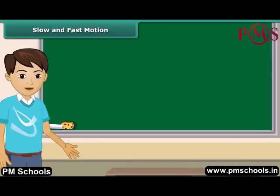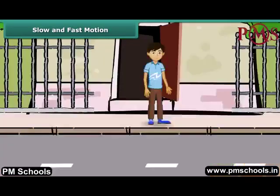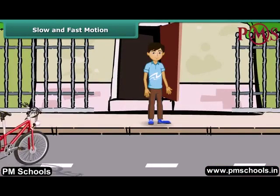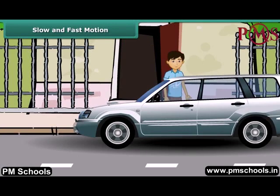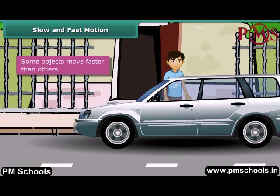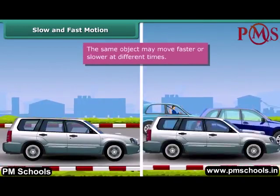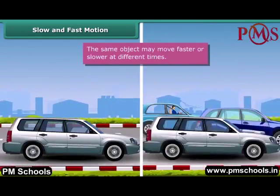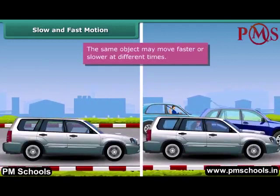Suppose you have an appointment with your doctor at 5 in the evening. It is already 4:30 pm and the doctor's clinic is 5 km away from your house. You have the choice of either cycling down or taking a taxi to the clinic. You will take a taxi because a taxi is faster than a cycle. So we can say that some objects move faster than others. Now the same taxi moves fast on an empty road and slow on a busy road. Thus the same object can move fast at one time and slow at another time.